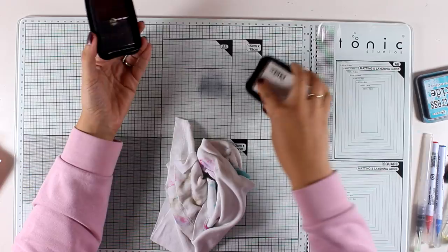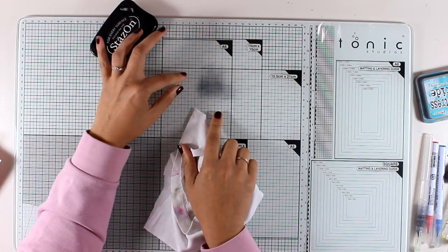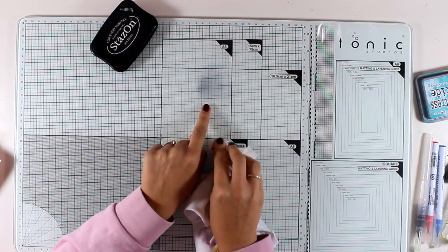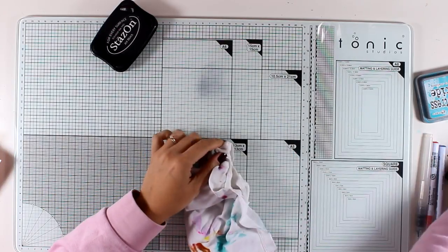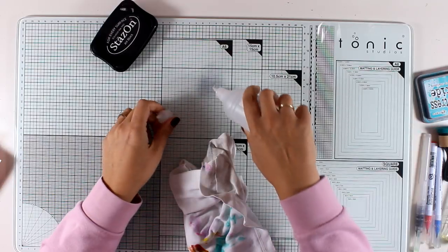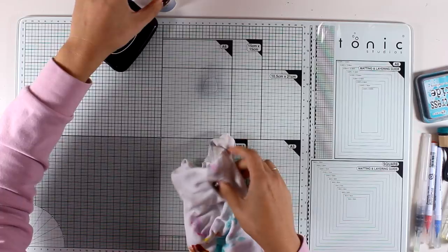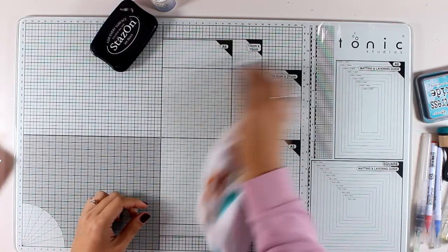I can easily remove stains that are more persistent, such as StazOn ink, for example. This doesn't come off with my towel, so I'll just add a drop of my isopropyl alcohol or you can even use your StazOn cleaner on top of your glass and just clean everything off.